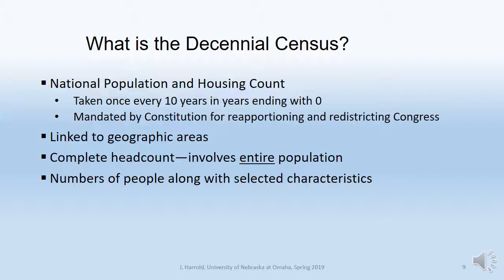Let me talk for a couple of minutes about the census. The decennial census — the Census Bureau is really the oldest data-gathering agency in the U.S. government, authorized and mandated in the Constitution. In the Constitution of 1787, it said we're going to do a census count every 10 years. The main constitutional purpose is to redistrict Congress — to figure out how many people live in the states, and then tell states how many members of the House of Representatives they're allowed.